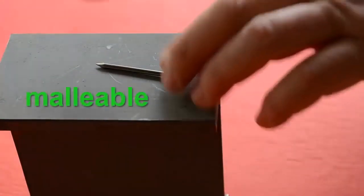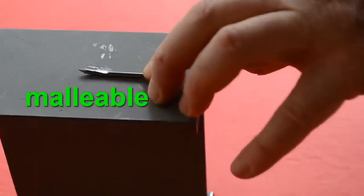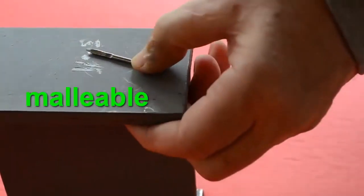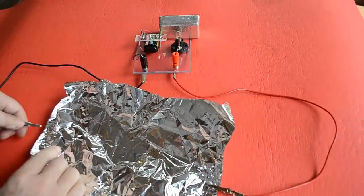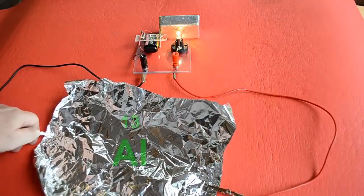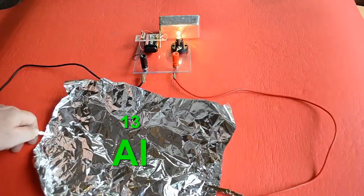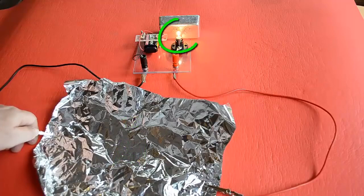Metals are also malleable, which means that if you belt them with a hammer, they'll flatten into a thinner shape. Here you can see that aluminium has three metallic properties. It's already been flattened into a thin sheet. It's shiny, and it conducts electricity.